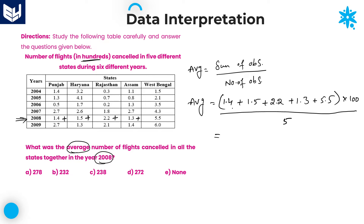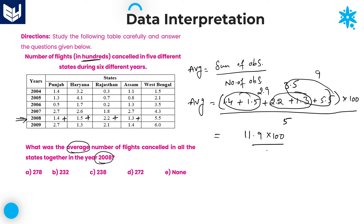Now add these values. 1.4 plus 1.5 is 2.9. 2.9, and if you add 2.2 and 1.3 you get 3.5. 3.5 plus 5.5 which is equal to 9. 9 plus 2.9 is 11.9. 11.9 into 100 divided by 5, which is equal to 1190 by 5. Calculating this value: 1190 divided by 5 equals 238. Option C is the right answer — 238.